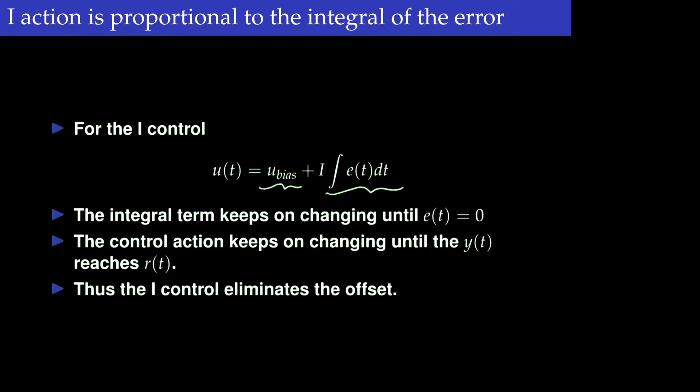For example, if you are driving at 50 km/h and the desired value is also 50 km/h, there should be some control action — that represents the bias term. The integral term keeps on changing until the error term becomes zero, so the control action also keeps on changing and does not become constant. Thus the control action eliminates the offset.